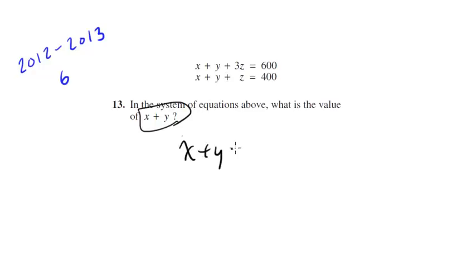We have x plus y plus 3z is equal to 600, and x plus y plus z is equal to 400. Now here I want to have x plus y, so I'm going to get rid of the z. I'm going to have to do a little bit of what you might be used to in your math class here.